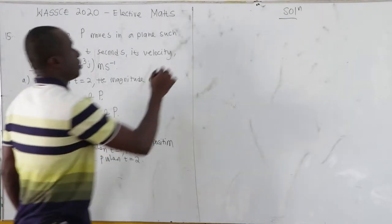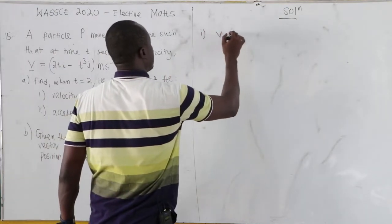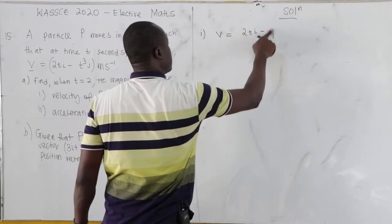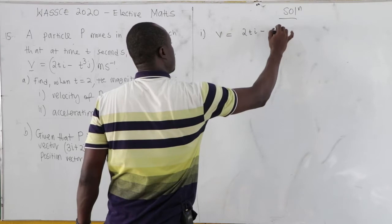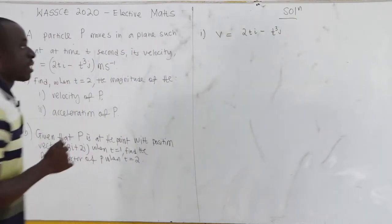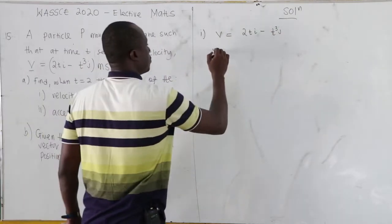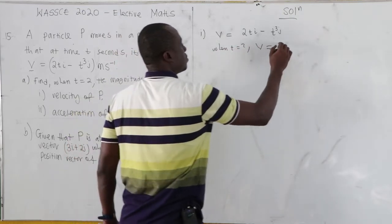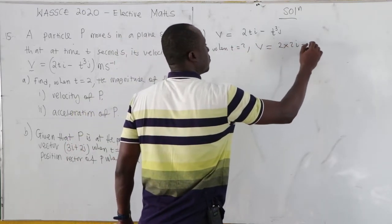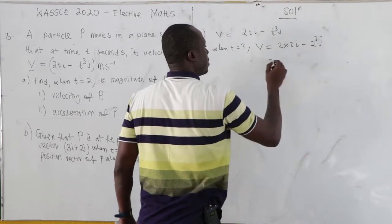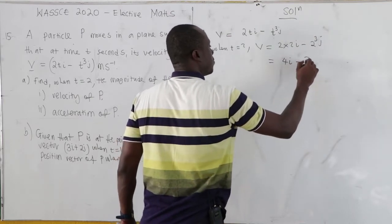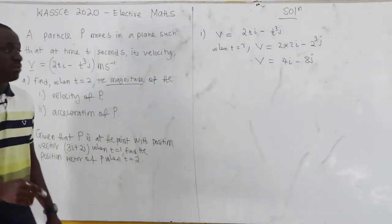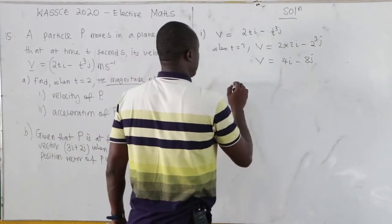Our velocity is 2ti minus t³j. When t is 2, our v becomes 2 times 2 i minus 2 to the power 3 j, and this is 4i minus 8j. Now what are we looking for? The magnitude.